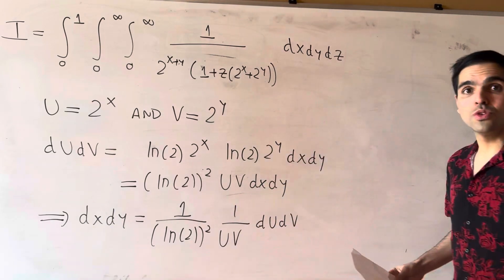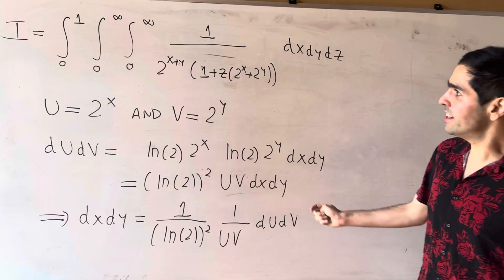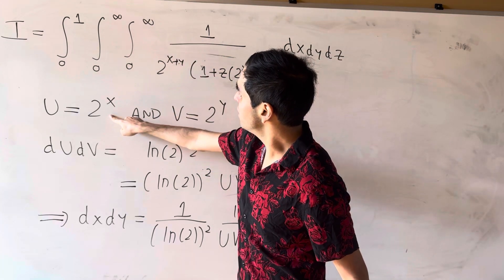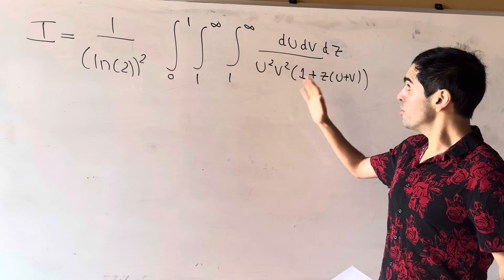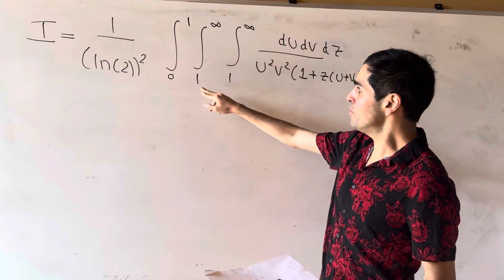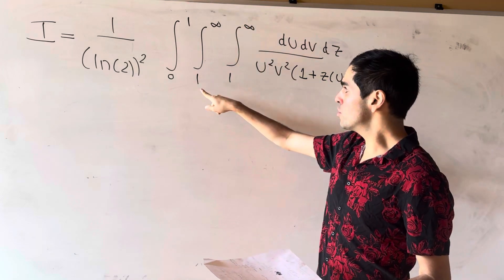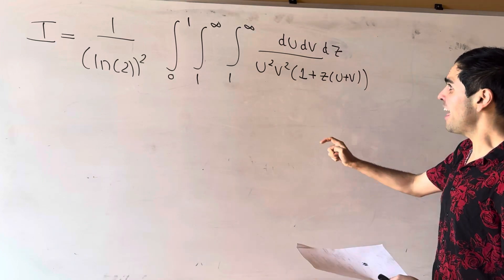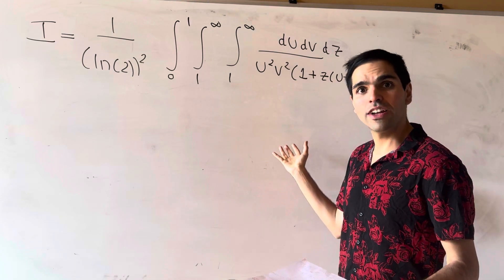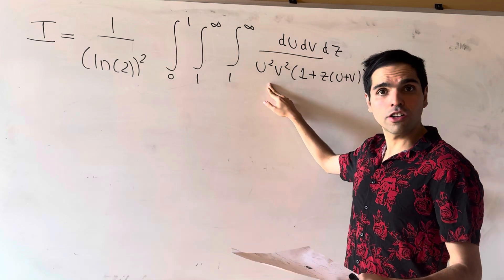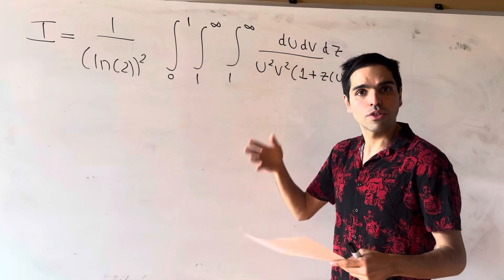You can also verify this using all the partial derivatives. Once you do that, the integral simplifies tremendously. Since x goes from 0 to infinity, u goes from 1 to infinity. We get one contribution of uv from 2^(x+y), and another uv from the Jacobian (du dv = uv dx dy).